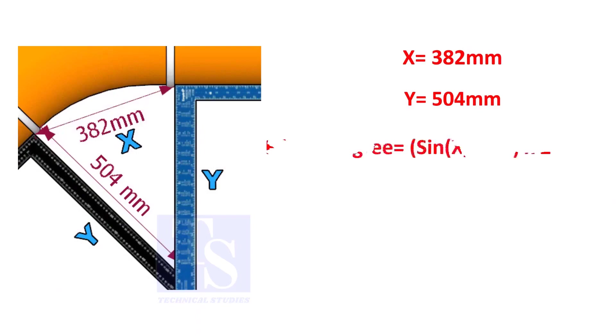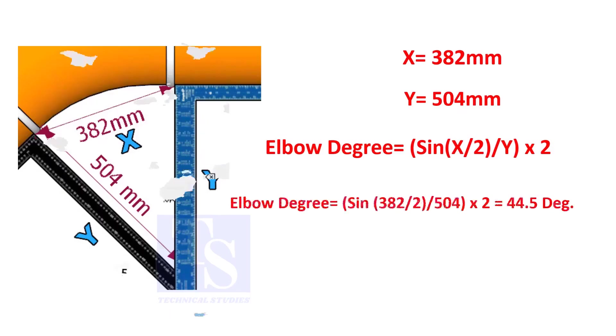Assume that the value of x is 382, and the value of y is 504. Divide the half value of 382 by 504, and convert the value to sine. Then multiply by 2.